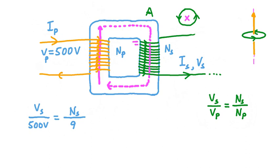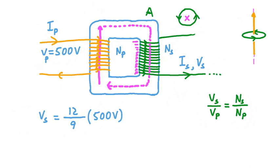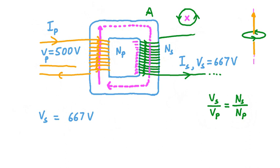Moving on to counting Ns: 1, 2, 3, 4, 5, 6, 7, 8, 9, 10, 11, 12 turns. So we fill in 12 for Ns in our equation. Then, multiplying both sides by 500 volts, we find that the voltage in the secondary coil is equal to 12 divided by 9 times 500 volts — that's the same as 4/3 times 500 volts, which is approximately 667 volts. This change from Vp to Vs is why this is called a transformer.